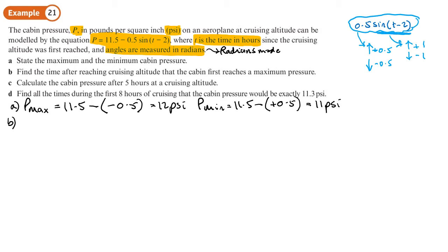Part B, find a time after reaching cruising altitude that the cabin first reaches its maximum pressure. So planes take off, they reach a cruising altitude, 35,000 feet, something like that. And the pilots stick at an autopilot. The cabin pressure is monitored automatically. And there's probably all sorts of sensors that if it goes too low, it will increase. If it goes too high, it will decrease it. And it probably goes up and down in a sign shaped graph. So I could imagine that the cabin pressure is probably going like that quite slowly.